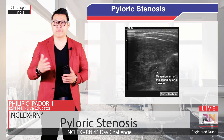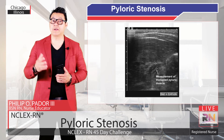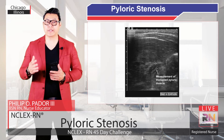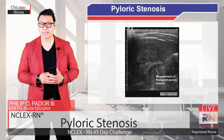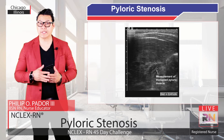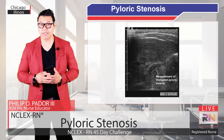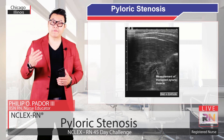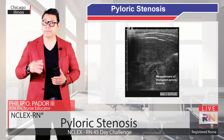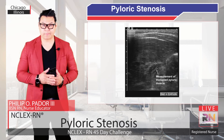In general, a pyloric muscle thickness of greater than 4 mm and length of greater than 16 mm yields sensitivity and specificity of 89 to 100% respectively.